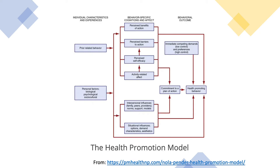What you will notice is that it is divided into individual characteristics and experiences, behavior-specific cognition and affect, and behavioral outcomes. So we know the beginning, we know the specific cognition and affect, and then we know what we're looking for in outcomes. I would recommend that you take a look at Pender's health promotion model in your textbook and walk through it as an example. I think it does a really good job of laying this out in a way that is common to nurses.